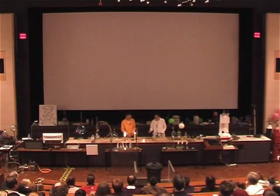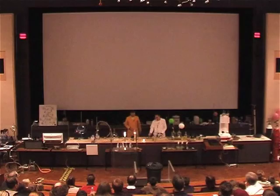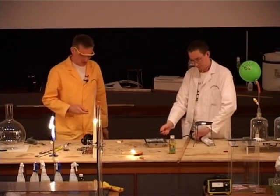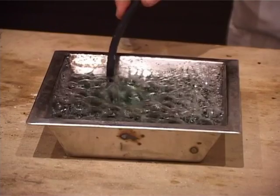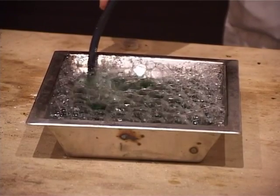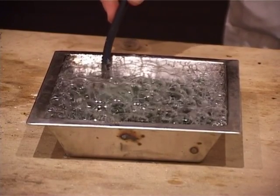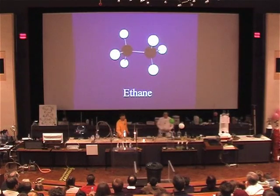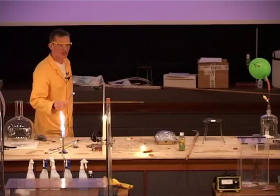Now we're going to burn some other fuels here, some other hydrocarbons. First of all we're going to start with a gas very similar to the methane in the Bunsen burner here. This gas is called ethane, and this consists of two carbons and six hydrogens.